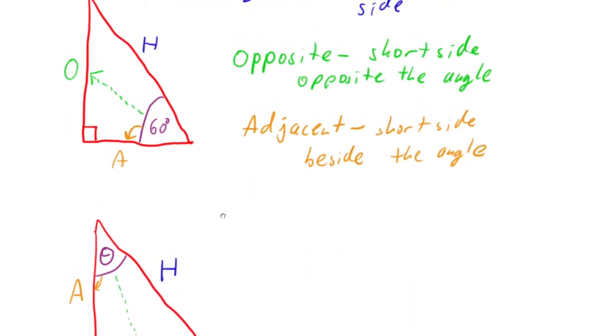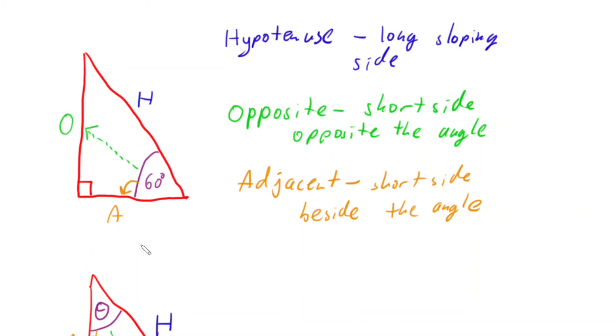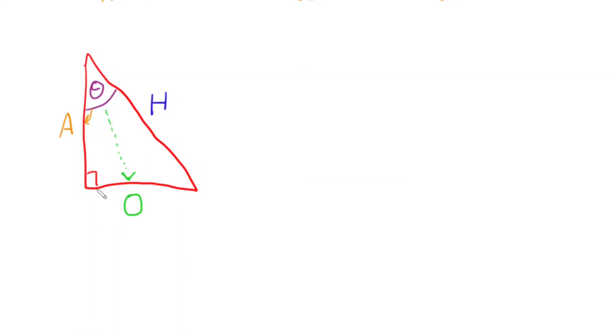And comparing these two triangles, here I had hypotenuse, opposite, and adjacent - the vertical was the opposite, the horizontal was adjacent. In this triangle, the vertical is the adjacent and the horizontal is the opposite. And it just comes down to where that angle is.